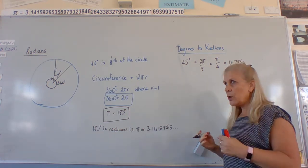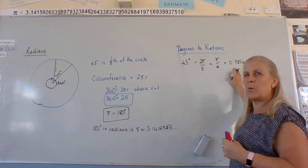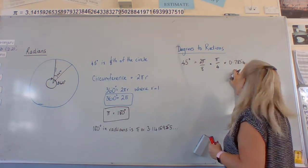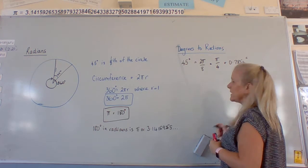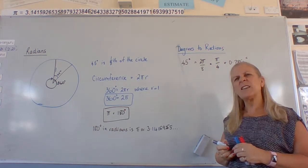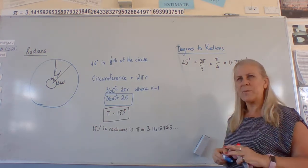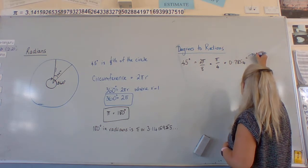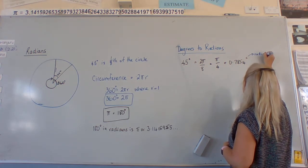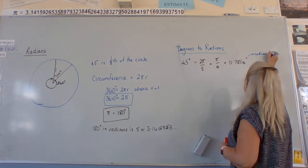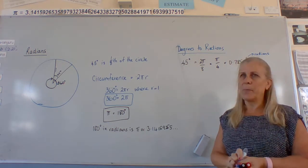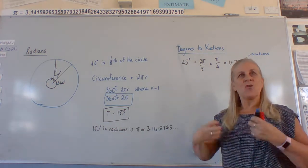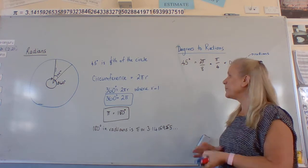Sometimes in books, they will want you to know that this is an angle measurement, so they might put a little superscript C. You don't see it very often and we don't actually have to use it very much. But that little C means radians — it means it's an angle measurement rather than just being a number on a piece of paper. We are talking about something related to an angle.